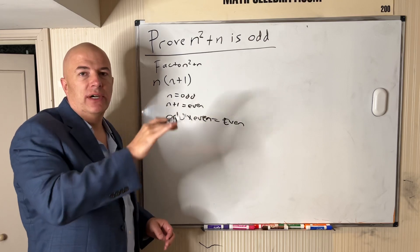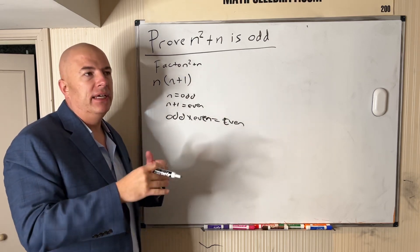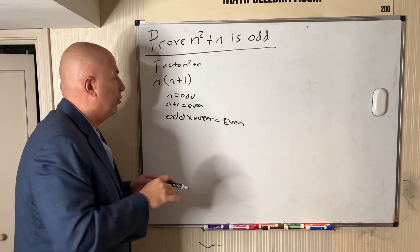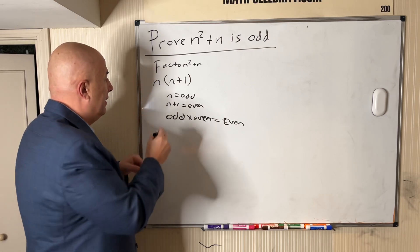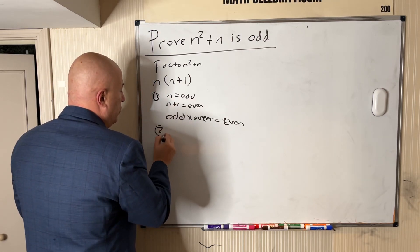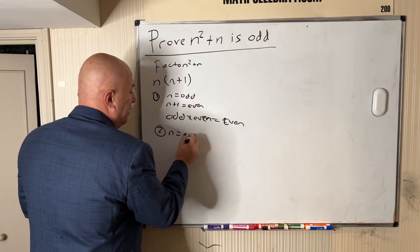Now we take the other scenario. This, by the way, some people call exhaustive scenarios. We want to go through every possibility for this proof. Scenario two: n is even.